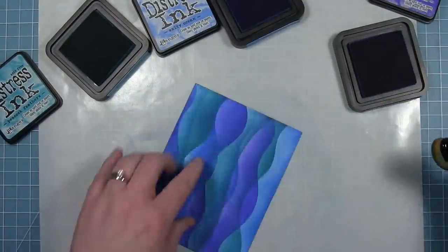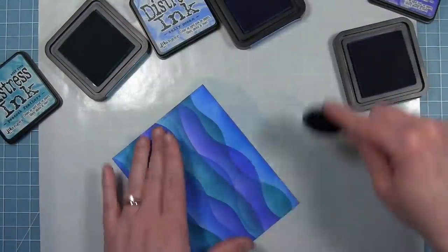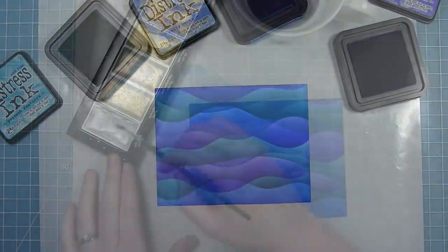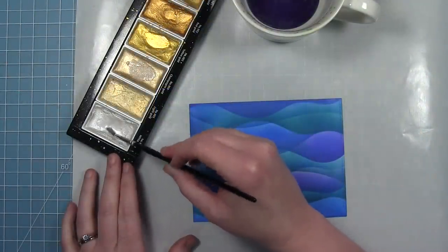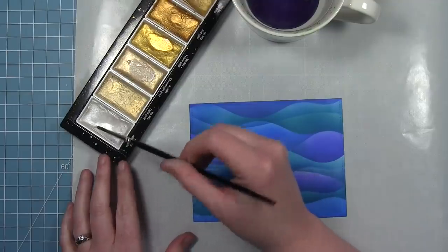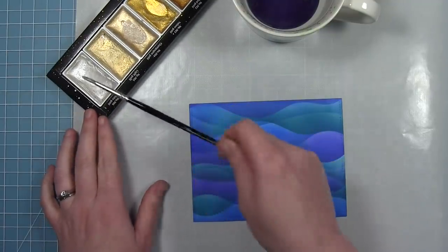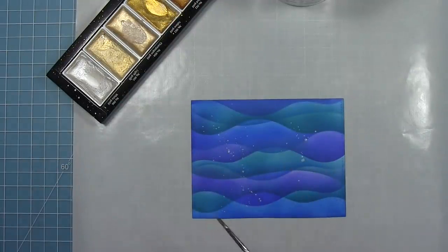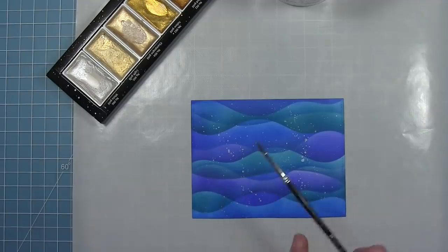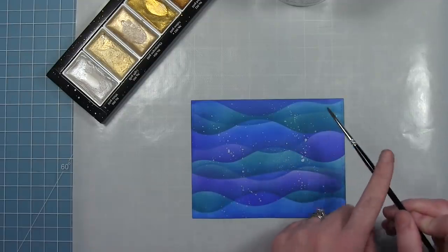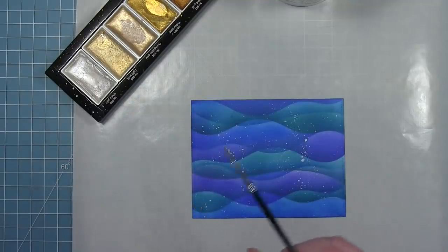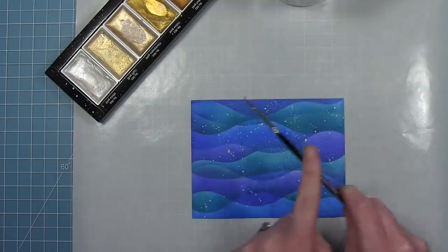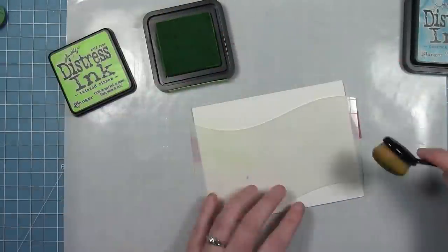And then once I'm done, I'm just going to go in and make sure the edges are nice and inked and it kind of defines the edges of this panel. Finally, I'm going to flick some white metallic watercolor. I just think this adds some nice texture to it and it being that bright white and metallic, it kind of looks like bubbles in the water to me. So once I get this looking the way I want it, I'm just going to set that aside and make sure everything is nice and dry before I cut the maze out of this.